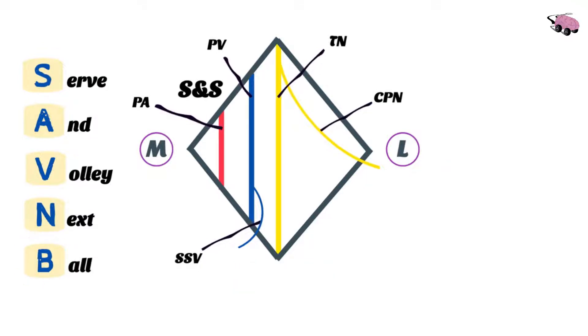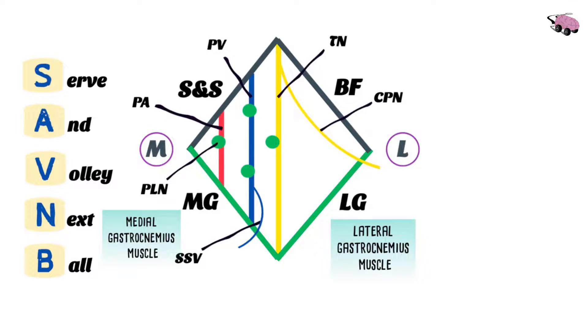B for ball represents our upper lateral border, the biceps femoris. These four green circles represent the popliteal lymph nodes. And finally, the lower two borders are our medial gastrocnemius and our lateral gastrocnemius.